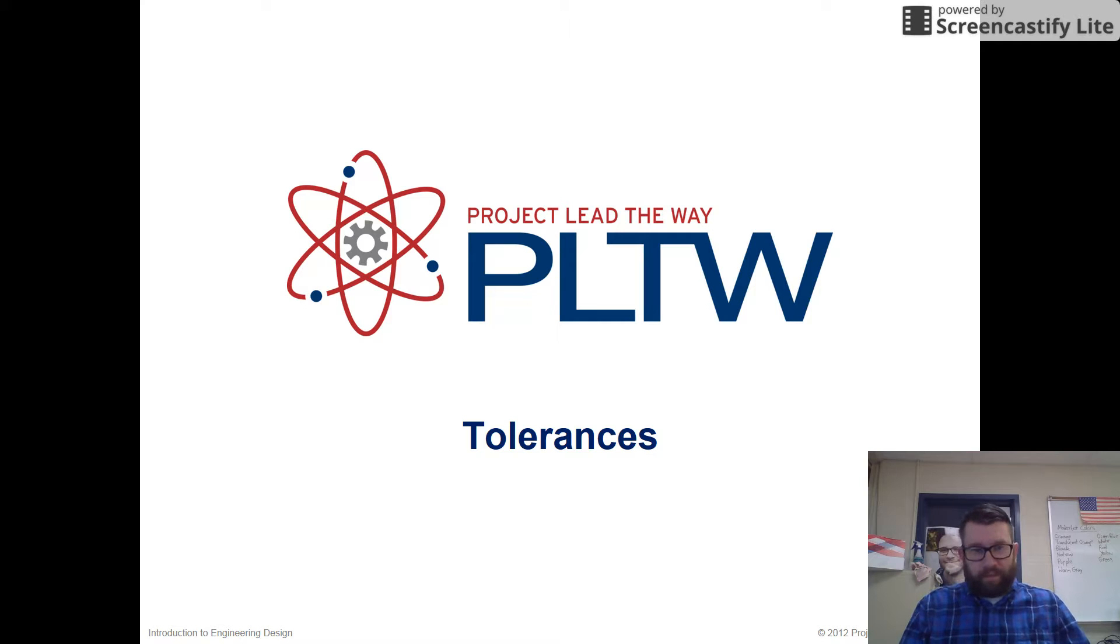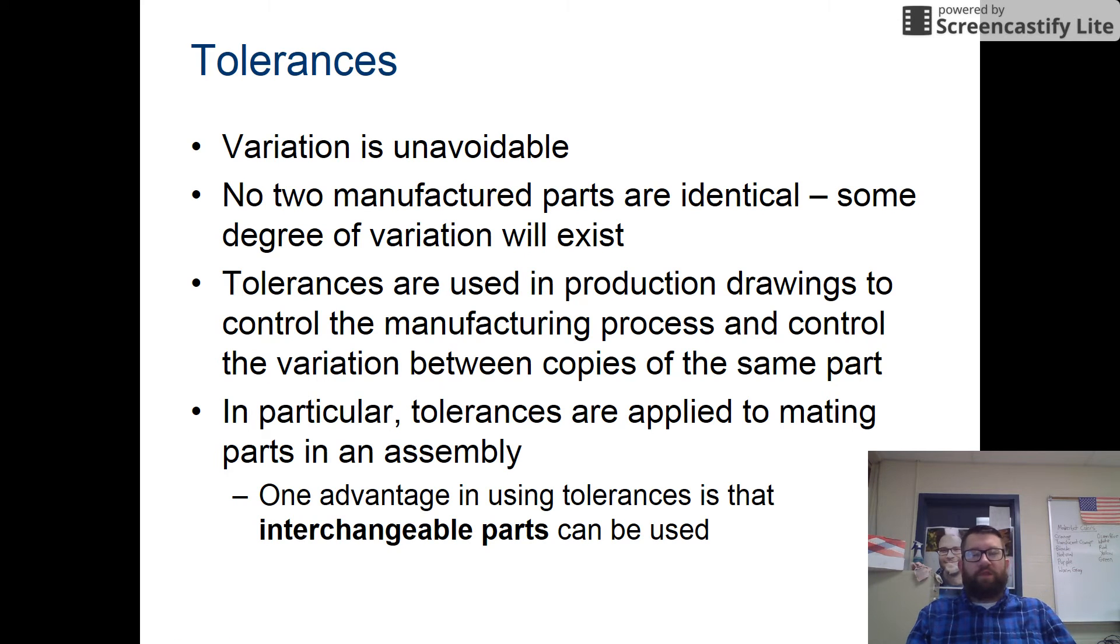Tolerances is really an allowable variation within a part. Variation is unavoidable. Even with the most precise machines, variation is going to happen. No two manufactured parts are identical. There's always going to be some degree of variation. Even though parts may appear identical, they're still not.